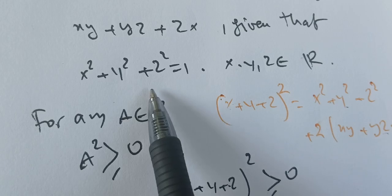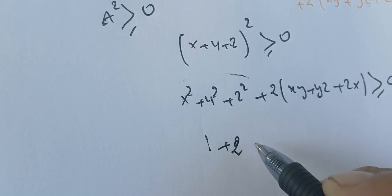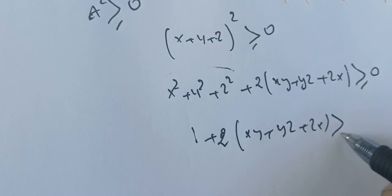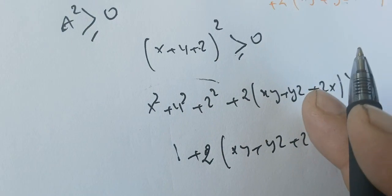So now we're going to use this condition here. So this is 1. So we have 1+2(xy+yz+zx)≥0. Now if we add -1 to both sides and divide by 2...